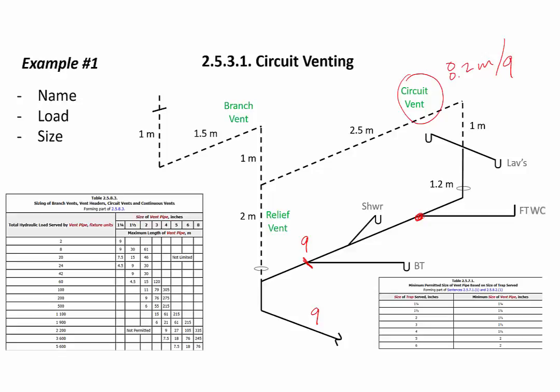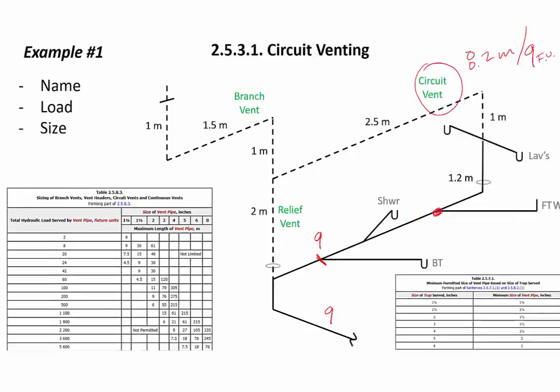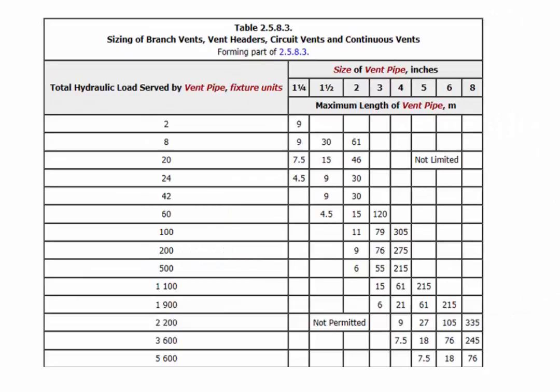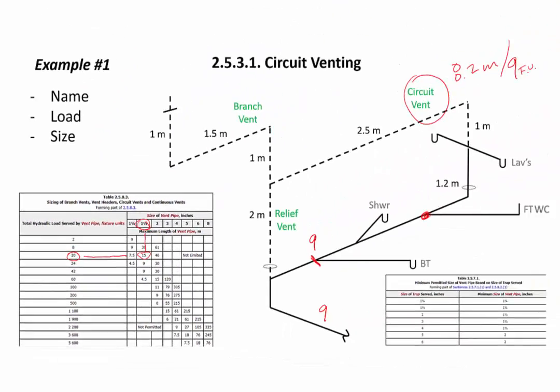The load on a circuit vent is everything that drains to the circuit. Taking that to table 2583: the total load served has exceeded 8 but not 20, so we look horizontally in that row. If the vent length did not exceed 7.5 meters we could use inch and a quarter, but we've exceeded that at 8.2 meters. For up to 15 meters we can use inch and a half — so inch and a half is the minimum size from table 2583 for the circuit vent.